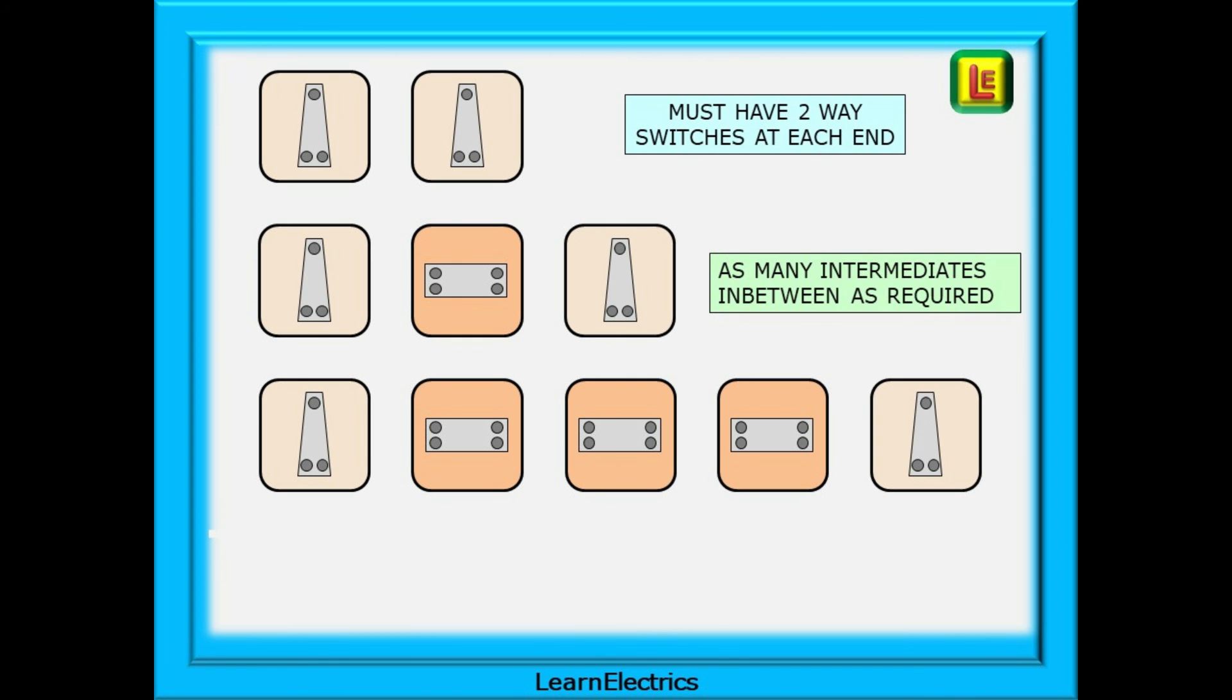So we started off with two-way switching, easy to do with either two-plate or three-plate systems. Both switches must be two-way switches. Then we looked at changing the two-way into intermediate switching. To do this we arranged to wire an intermediate switch between the two two-way switches. The two-way switches must always be wired as the first and last switches. Following this convention with two-plate or three-plate systems you can have as many intermediate switches as you need: three-way, four-way, five-way and so on.